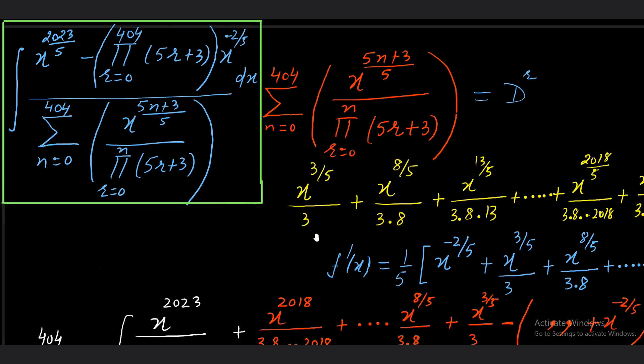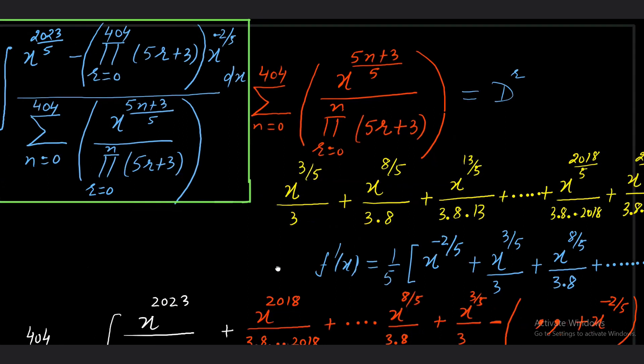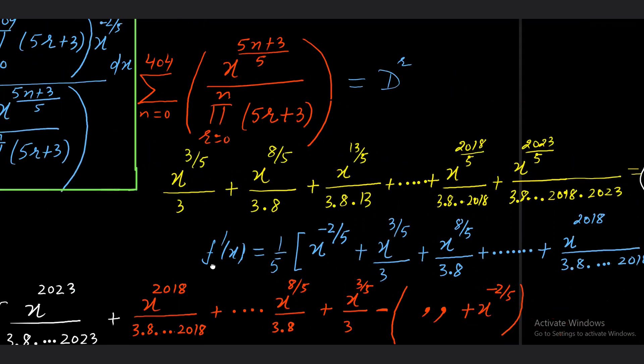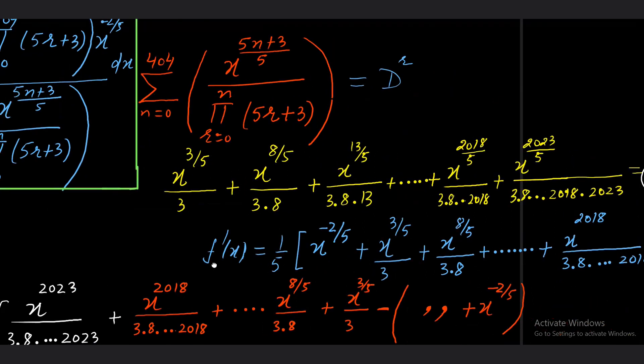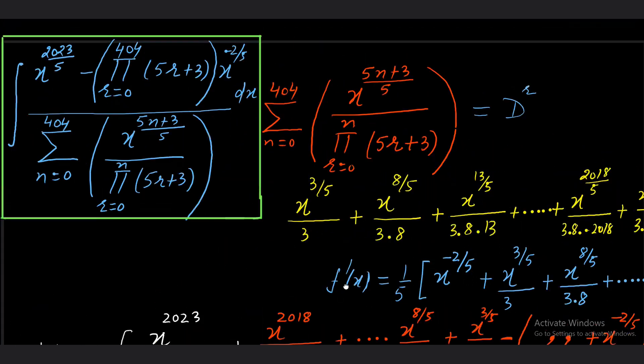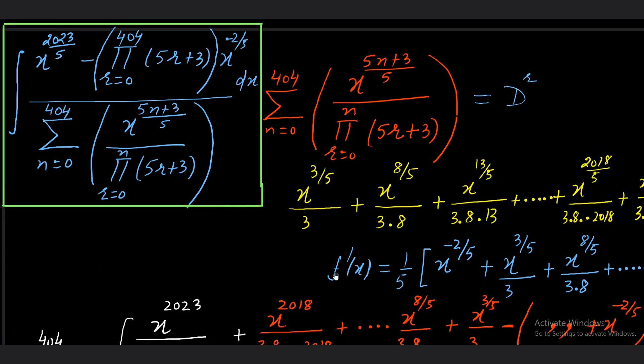Now you can observe that the highest power of x in the numerator is the same as the highest power of x in the denominator. You can check that in the denominator the highest power of x is 2023, and in the numerator it is also 2023.